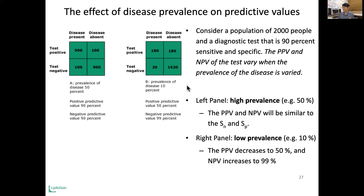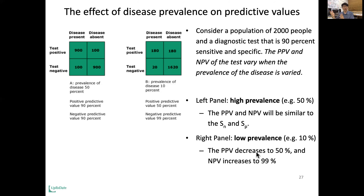The left panel shows high prevalence — in that case, PPV and NPV will be similar to sensitivity and specificity, which are both 90%. However, in the low prevalence case, the positive predictive value decreases. So when the disease is rare, even if you get a positive result, you don't have to worry that much until you get further tests.